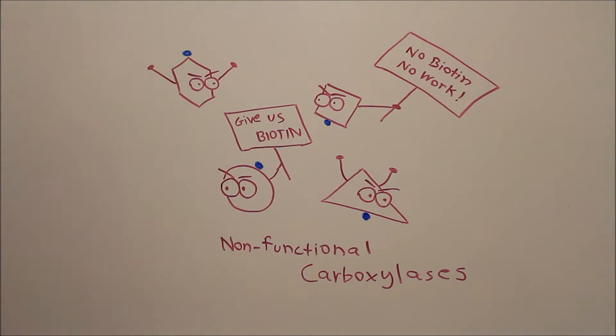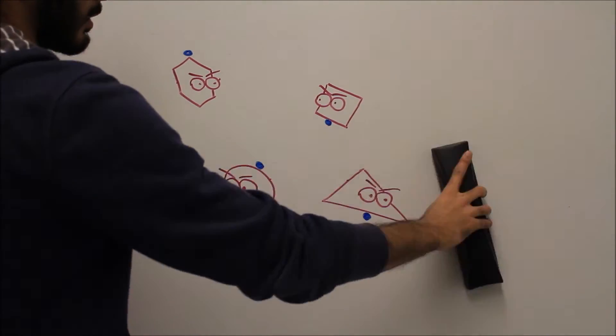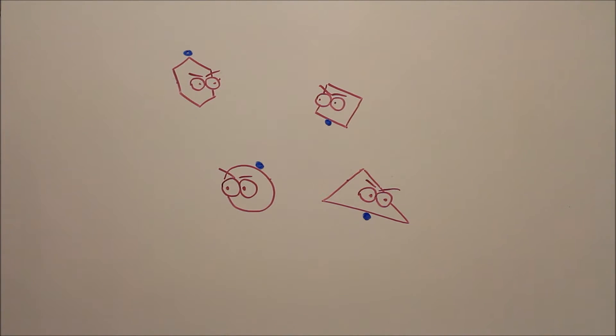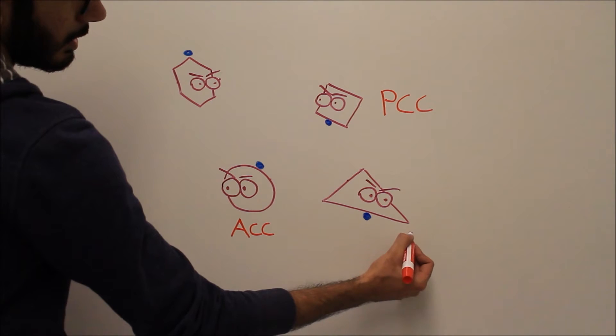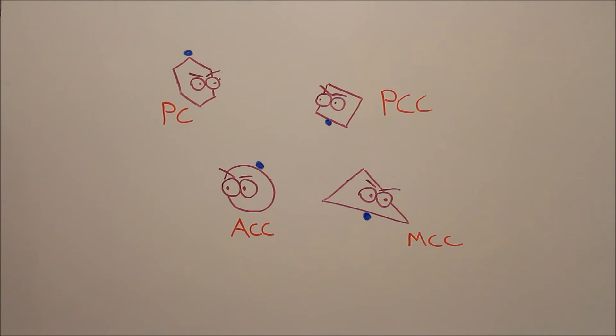So how does this affect the important metabolic pathways that utilize carboxylases? Let's focus on four major biotin-dependent carboxylases: Acetyl-CoA carboxylase, propionyl-CoA carboxylase, 3-methylcrotonyl-CoA carboxylase, and pyruvate carboxylase. Let's walk through things one at a time.